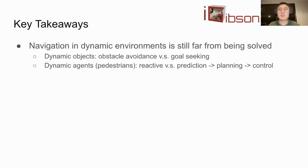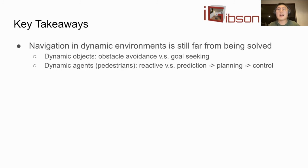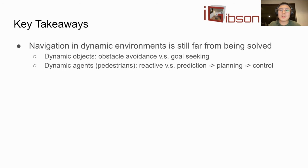After analyzing the results, here are some key takeaways for future research in robot learning for mobility in dynamic environments. First, navigation in dynamic environments is still far from solved. Dynamic objects are challenging because the agent needs to balance obstacle avoidance and goal-seeking — participants' policies tended to be conservative and didn't interact with clutter objects as much as needed to achieve higher success rates. Dynamic agents are also super challenging because the robot needs to understand humans' intent and predict their behavior. Most participants use a reactive, model-free approach training with negative reward when the robot gets too close to pedestrians — it will be interesting to compare this against model-based approaches with prediction, planning, and control in the loop.